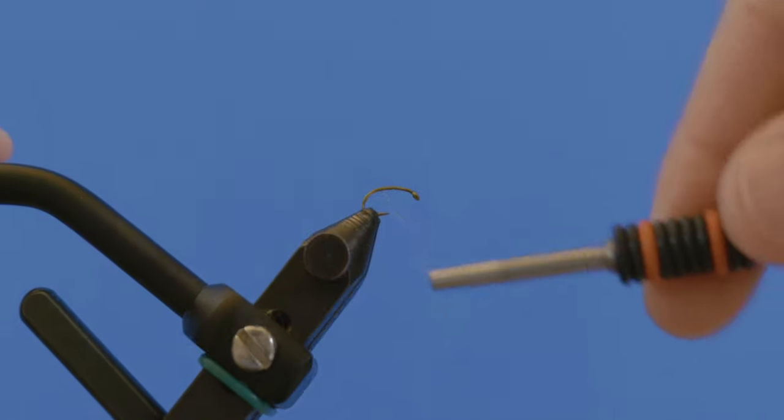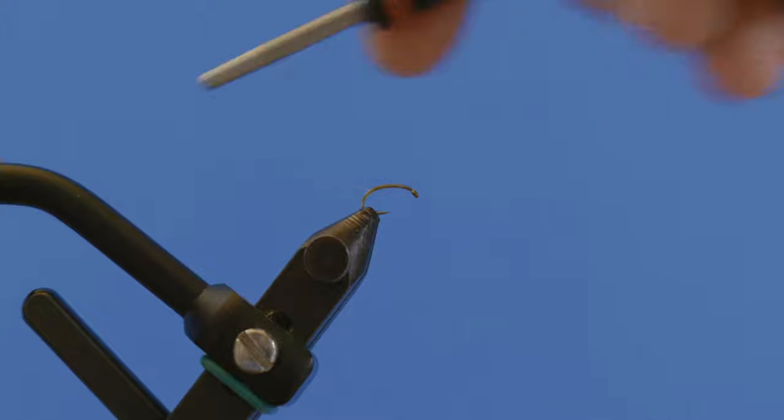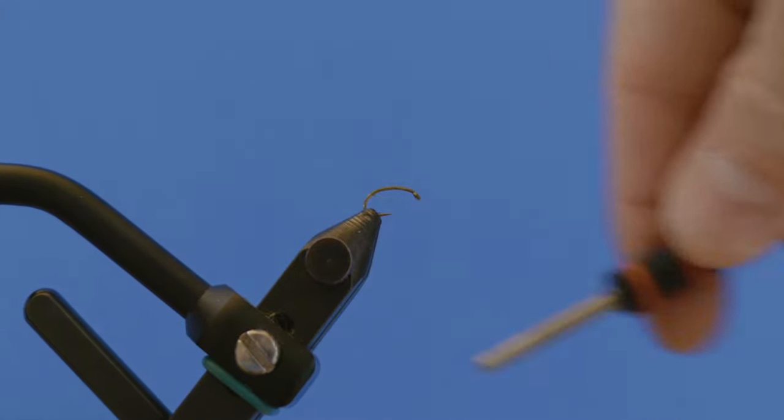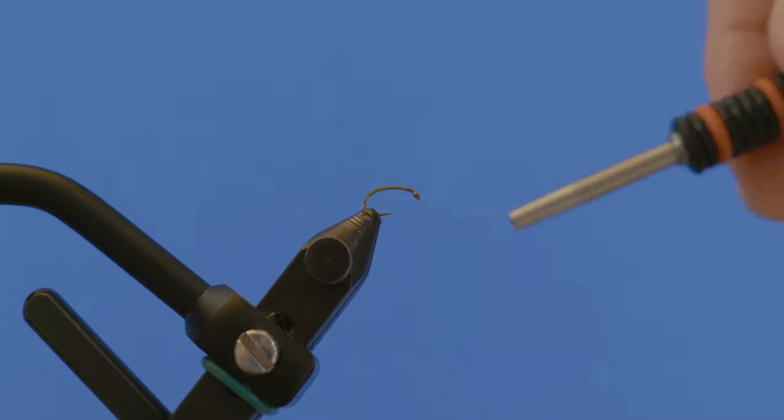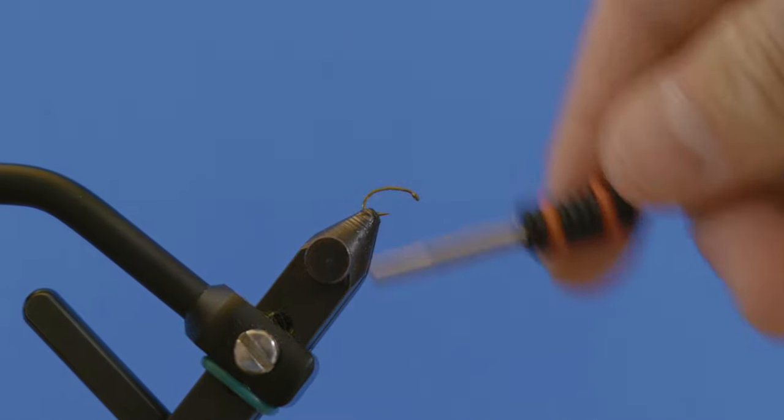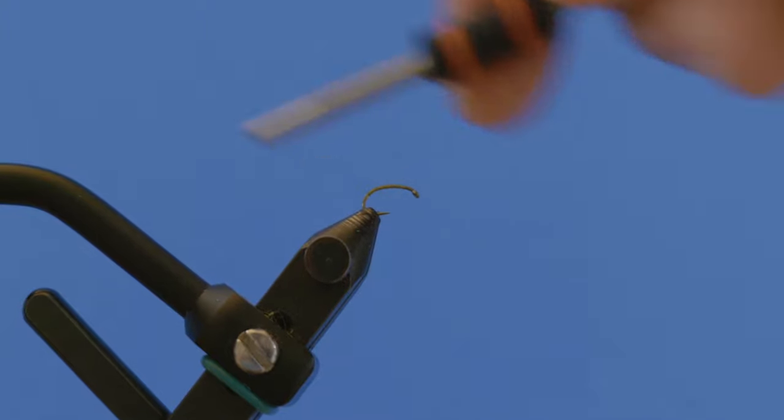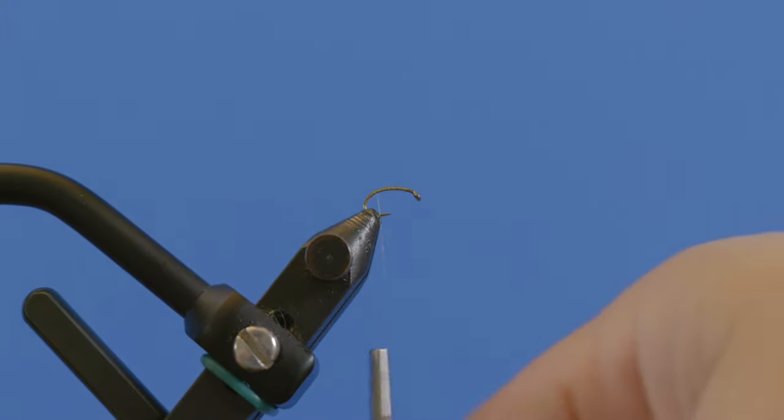I tie it in a bunch of different colors, but mostly I fish it in olive and black. So I'm going to go down the bend a ways on this hook and then I'm going to come back forward and then back down again, just to about where the barb would be or just past it.